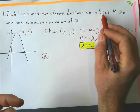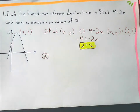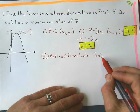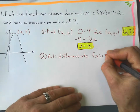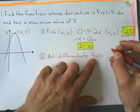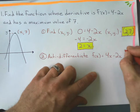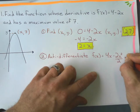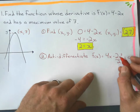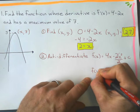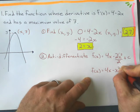If I'm given the derivative function and I want to find the original function, I have to use anti-differentiation. So I'll anti-differentiate this equation, and that gives f(x). I get 4x minus 2x — add 1 to the exponent and divide by the new exponent — plus a constant. Simplifying, the twos cancel out, and I get 4x minus x squared plus c.